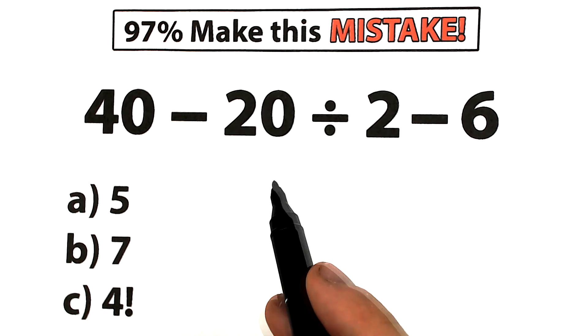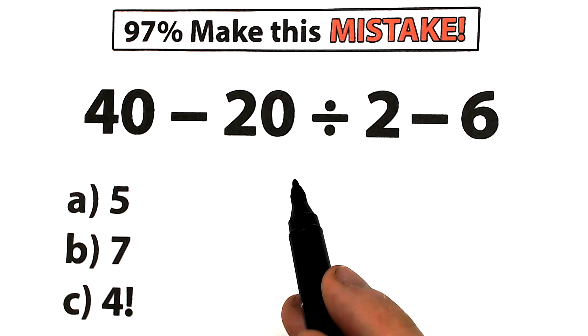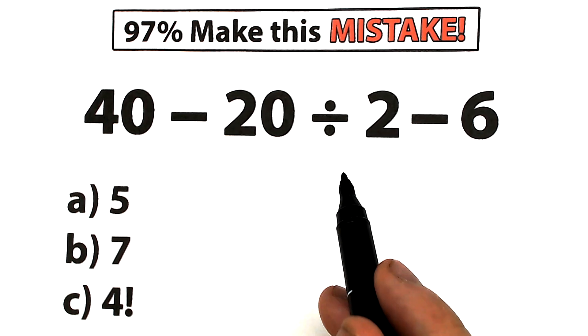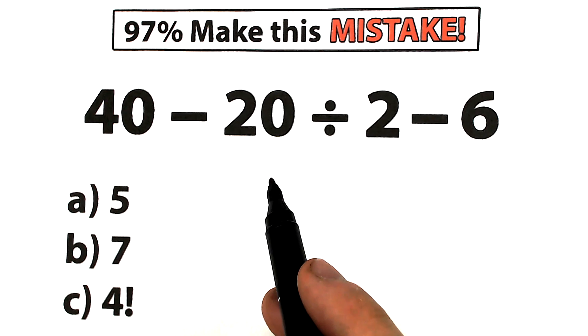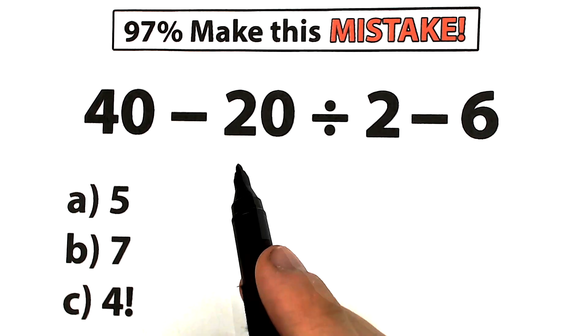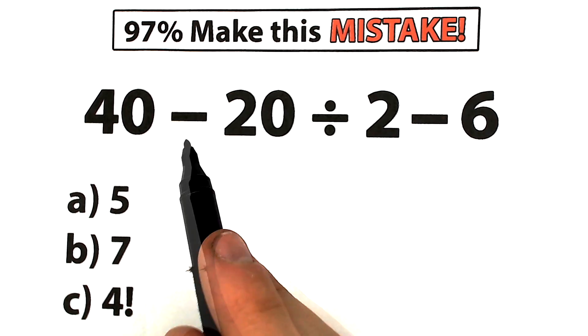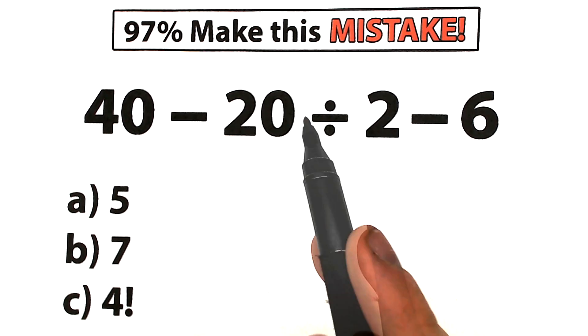Don't panic — I'm going to fully explain where you're probably going to get this wrong and how to avoid this particular mistake. Let me go ahead and tell you the problem we have: 40 minus 20 divided by 2 minus 6. So here's our challenge.